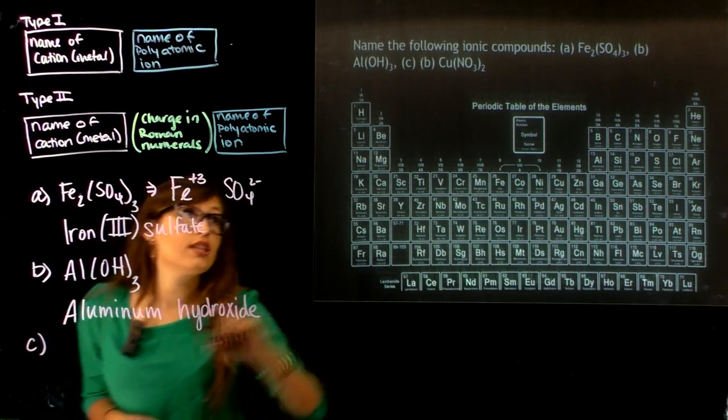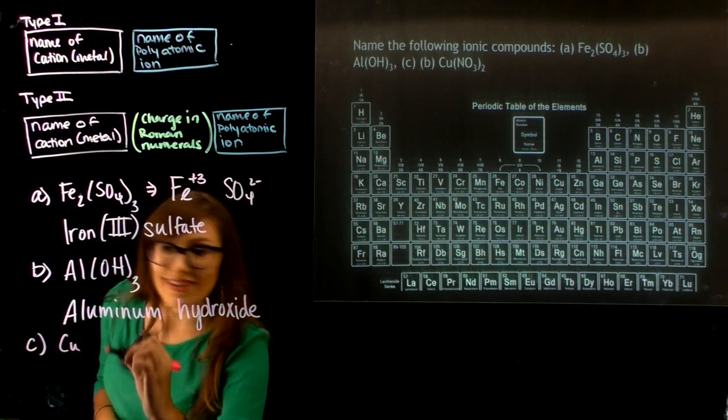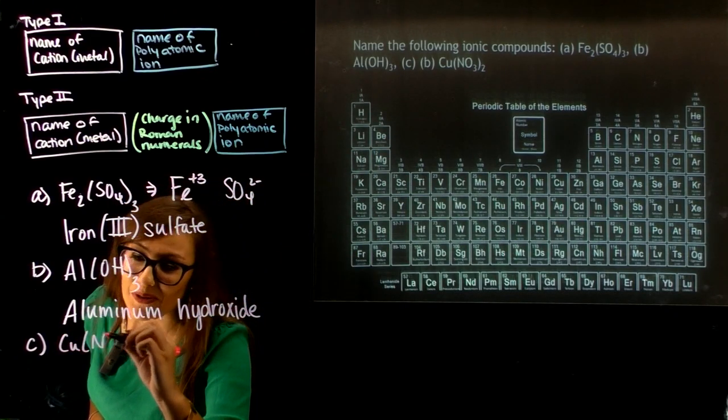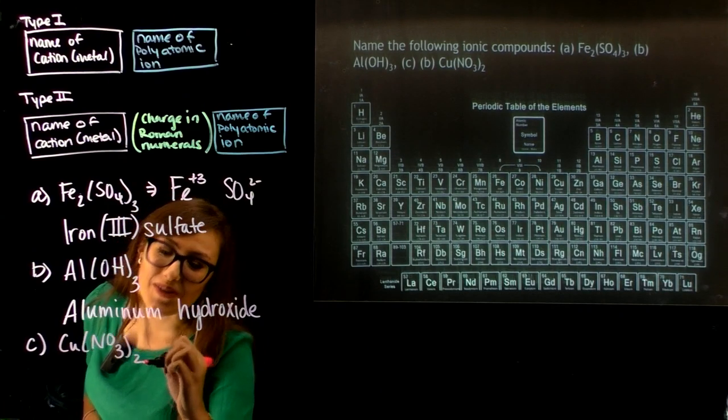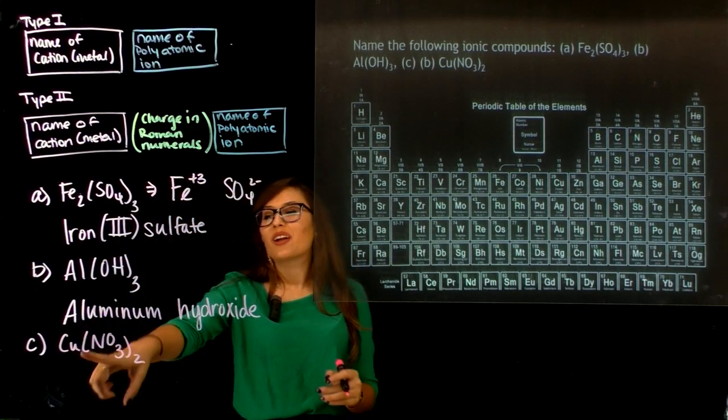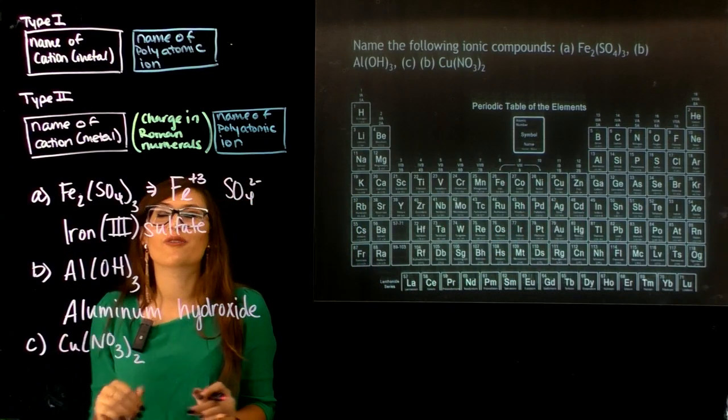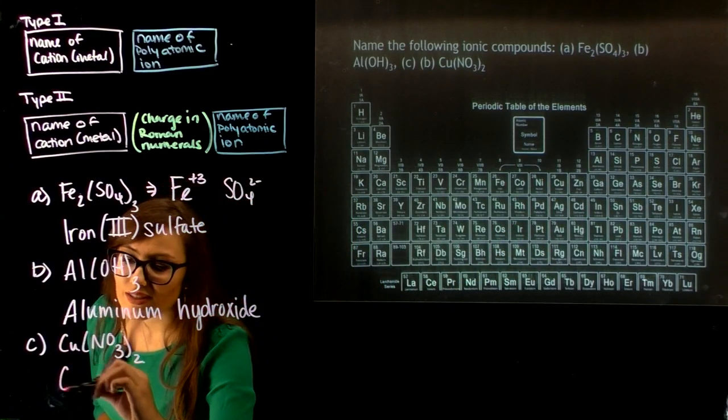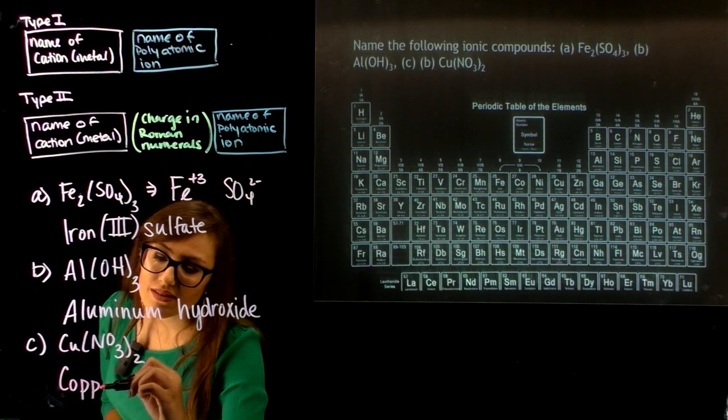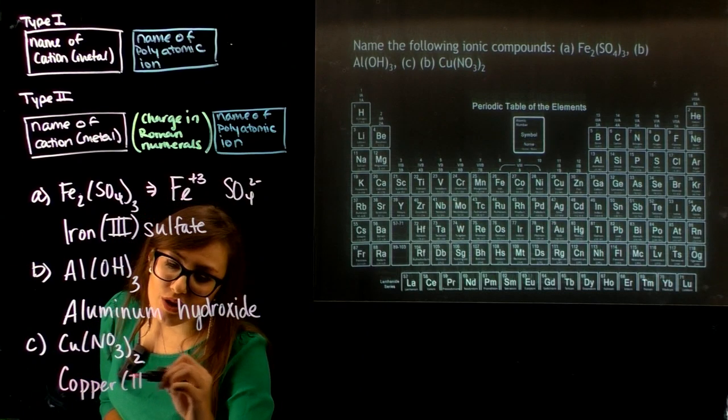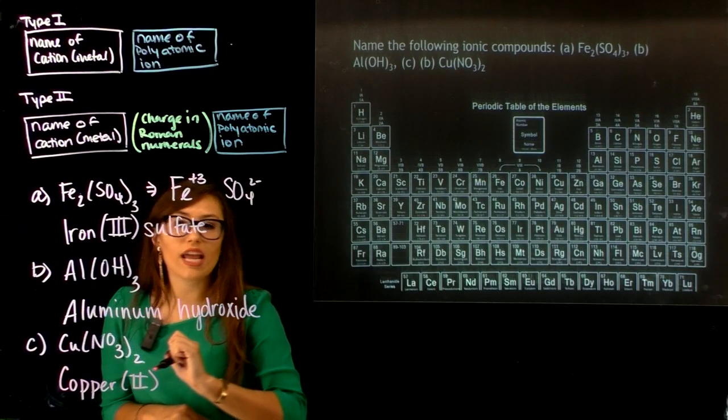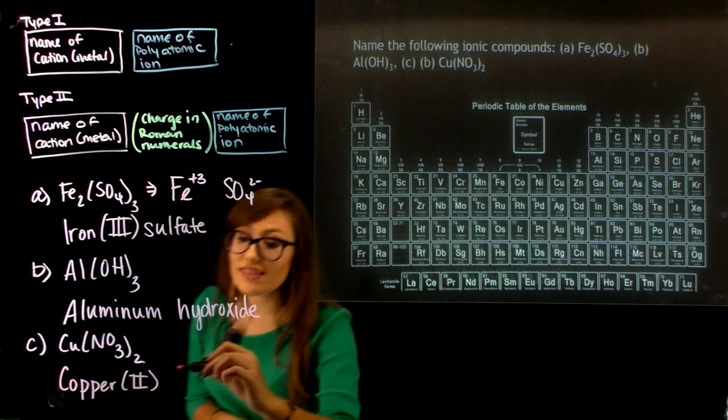And for C, we have Cu(NO₃)₂. Copper is a transition metal, so we're going to be following Type 2. So this is copper(II), and then the name of our polyatomic anion in this case is nitrate.